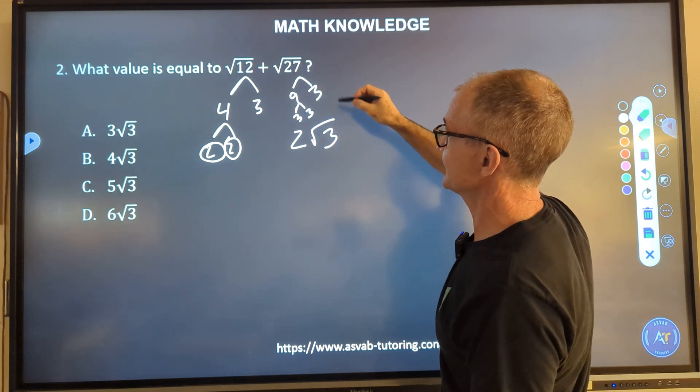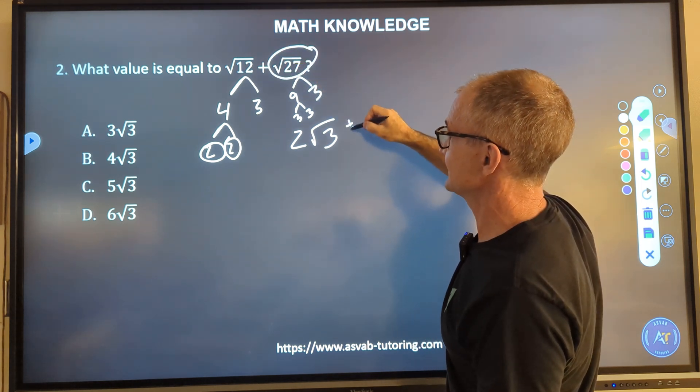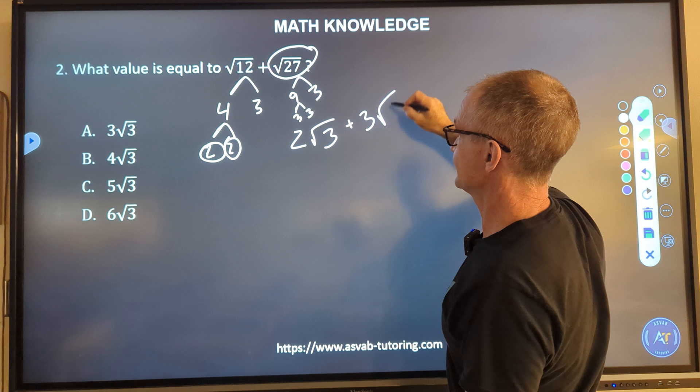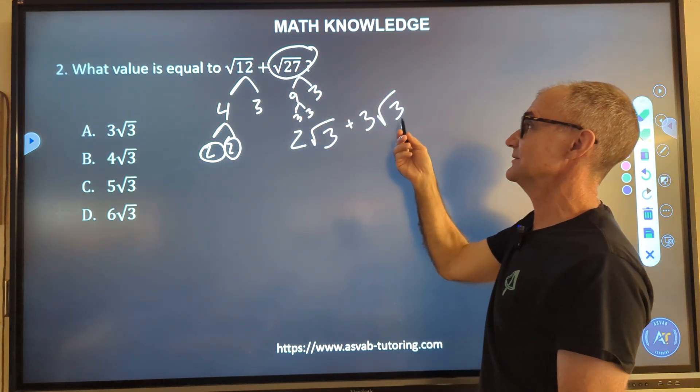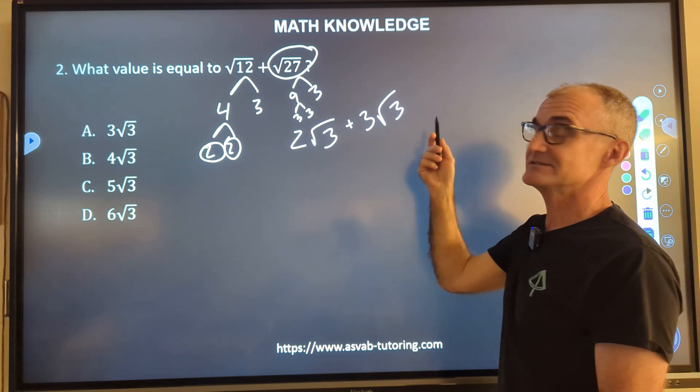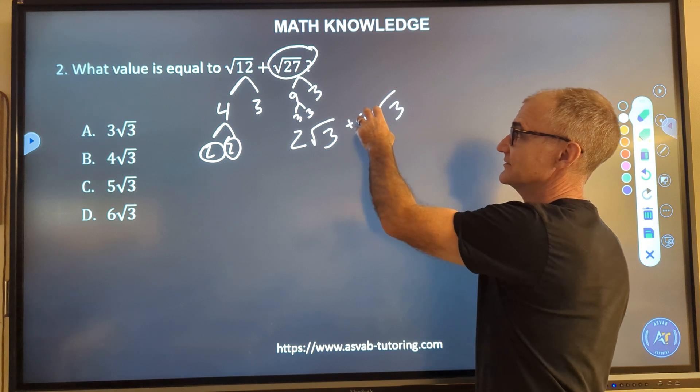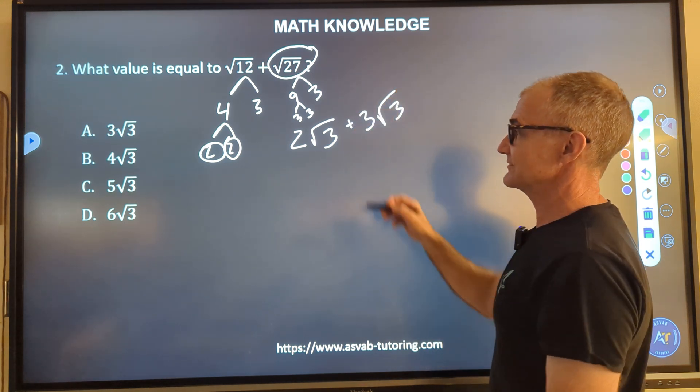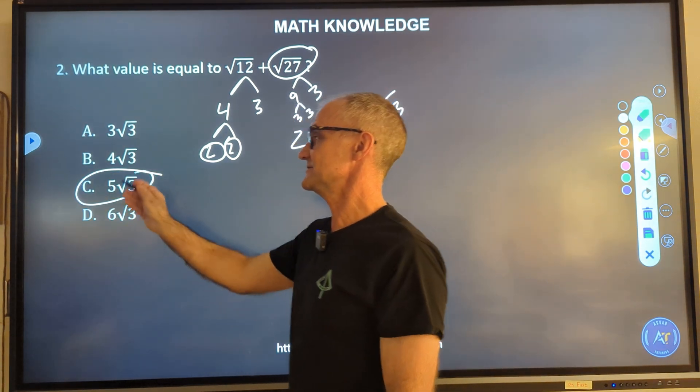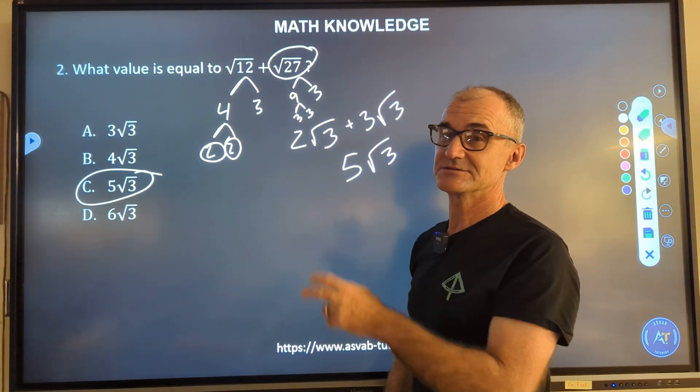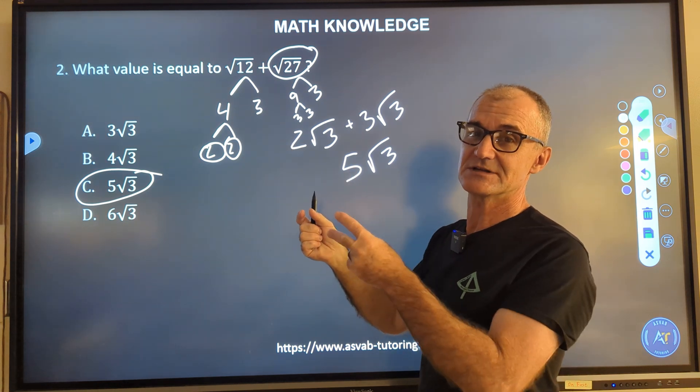For every pair, one comes out, so I have two on the outside of that square root. That three stays on the inside. So this is two root three. Root twenty-seven is nine and three. Nine is a pair of threes. So radical twenty-seven is equal to three root three. I'm adding these two things together. I got two root threes plus another three of these things. So I have a total of five root three. Answer C. A lot of these problems have two steps. First to simplify and then combine.